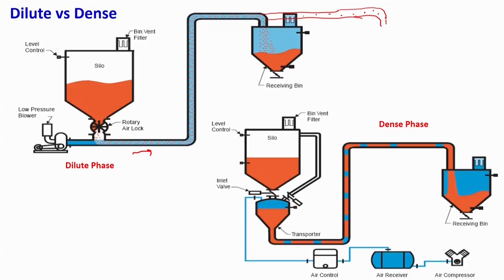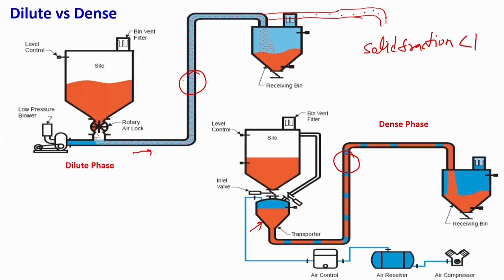You can have multiple input and multiple output in the dilute phase regime. In the dense phase, you can have multiple inputs but at each input you have to put a transporter — you are pressurizing the transporter and the solid flows in the form of a slug. The major advantage of the dilute flow regime is that multiple inputs and outputs can be there without extra expenditure, but the solid transfer rate will be very low because the overall solid fraction is less than 1 percent.